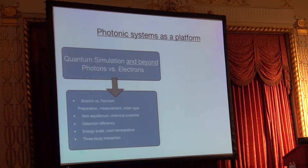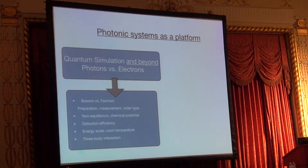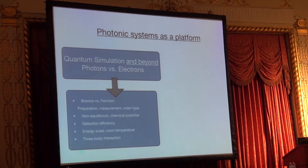Photonic systems are usually driven out of equilibrium. In a normal photonic system, you pulse it with a laser field from outside, so right off the bat the questions of non-equilibrium physics become important. In an electronic system, we usually cool down the system to the ground state and look at the ground state properties.